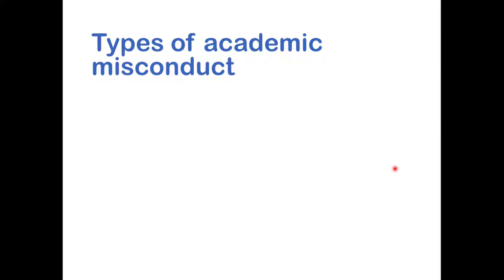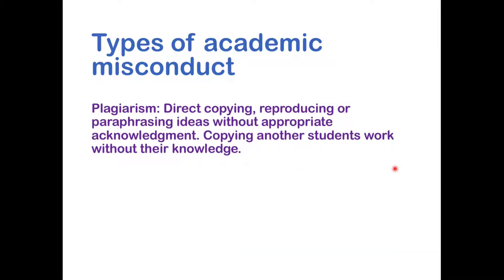The university has various types of what it calls academic misconduct — basically not playing by the rules or not submitting work in a fair way. One of these is plagiarism, which might be either direct copying, reproducing, or paraphrasing ideas without appropriate acknowledgement. Paraphrasing is when you take someone else's words and change them just a little bit, but they remain fundamentally someone else's ideas. Plagiarism also includes copying another student's work without their knowledge and presenting it as your own.